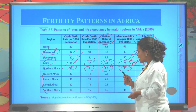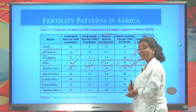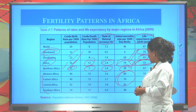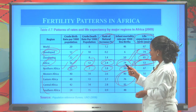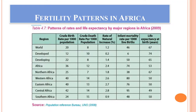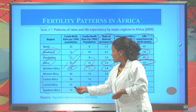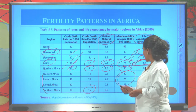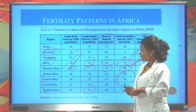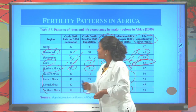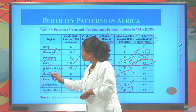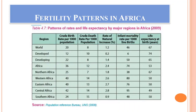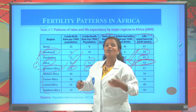Western Africa, Eastern Africa, and Central Africa have high fertility rates and also high infant deaths. The life expectancy of Western, Eastern, and Central Africa is 51 years. Southern Africa has a high mortality rate — infant deaths are 48 per thousand and life expectancy is 59 years. North Africa has the longest life expectancy when compared to other regions of Africa, at 69 years.